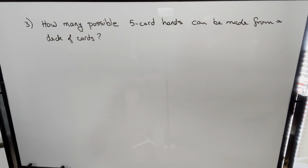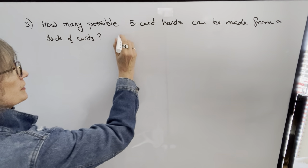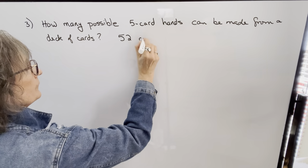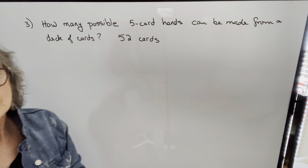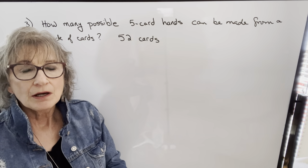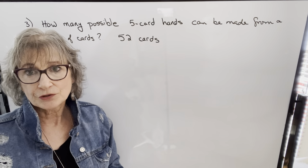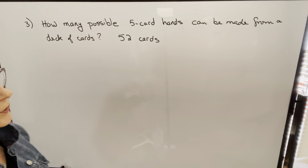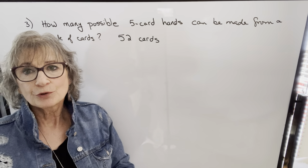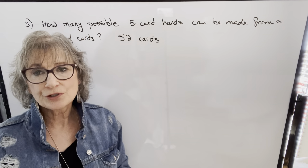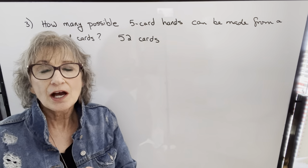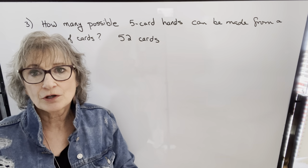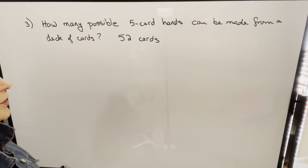Our next example says: how many possible five card hands can be made from a deck of cards? A deck has 52 cards. If we're dealing five cards to somebody, the order doesn't matter — we're not putting the cards in a particular order. It's not how many arrangements, just how many groups of five cards are possible. So this is a combination.